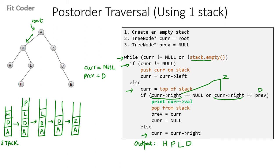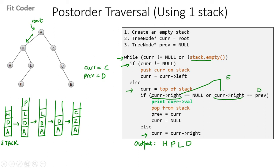In the next iteration, stack is not empty, so `current` becomes equal to top of stack, which is Z. Right of Z is C, and `previous` is D, so this if condition is not true. We come in the else part, and `current` becomes equal to right of Z, which is C. In the next iteration, `current` is not equal to null, so we push `current` on the stack, and `current` becomes equal to left of C, which is null. In the next iteration, stack is not empty, so we come in the else part. `Current` becomes equal to top of stack, which is C. Right of C is E, and `previous` is D, so this is not true. We come in the else part, and `current` becomes equal to right of C, which is E.